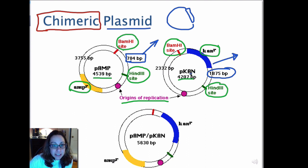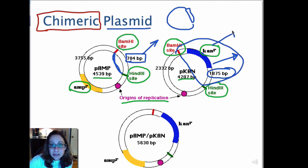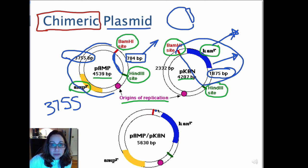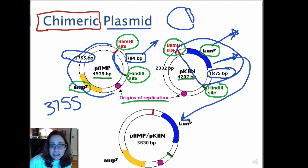This was designed very carefully. You're cutting out a region from the P-AMP plasmid that doesn't have anything important in it, while cutting out a region from P-CAN that contains the entire kanamycin resistance gene. Then you take the remaining P-AMP backbone — 3,755 base pairs — and ligate in the 1,875 base pair fragment, since both ends have the BAMH1 and HINDI-3 sticky ends, generating a brand new plasmid.